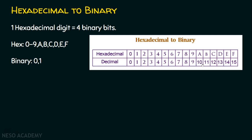For decimal 10, the hexadecimal equivalent is A. For 11, the hexadecimal equivalent is B. 12, 13, 14 and 15 in decimal — their hexadecimal equivalents are C, D, E and F respectively.